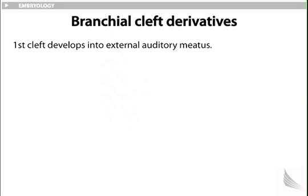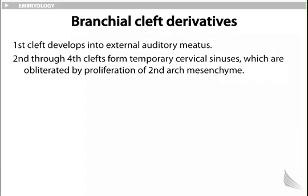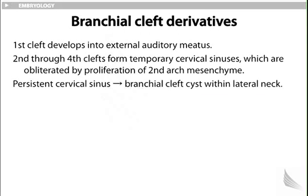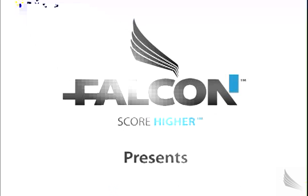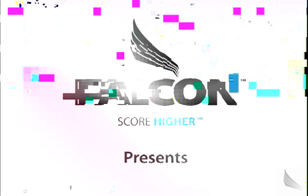Branchial cleft derivatives: The first cleft develops into the external auditory meatus. The second through fourth clefts form temporary cervical sinuses, which are obliterated by proliferation of second arch mesenchyme. A persistent cervical sinus leads to a branchial cleft cyst within the lateral neck.